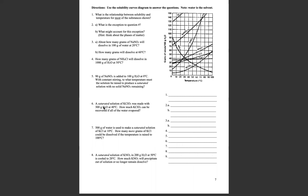So number six says we've got a saturated solution of potassium chlorate was made with 300 grams of H2O or water at 40 degrees. How much potassium chlorate can be recovered if all of the water evaporated? So it's saying we have a solution, it's saturated, and if all of the solvent evaporated, all the water evaporated, how much of the solute would be left?